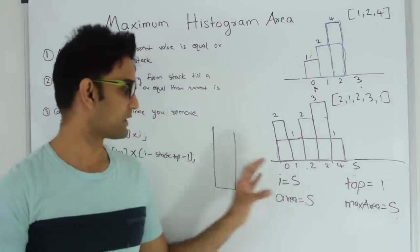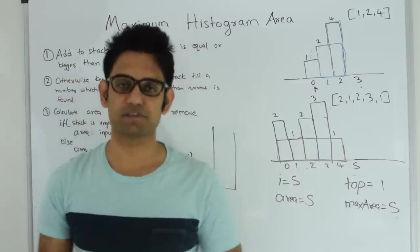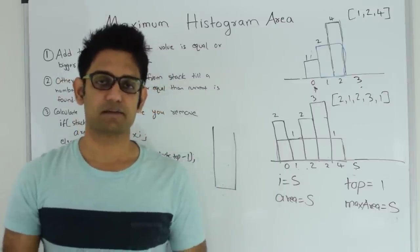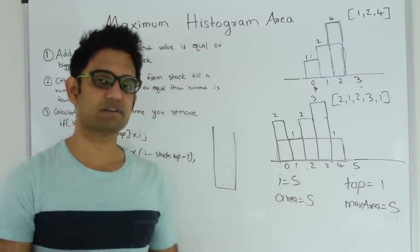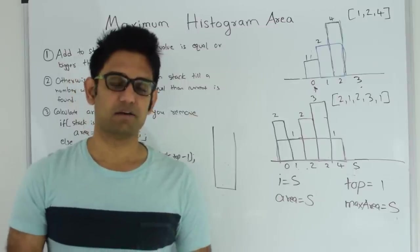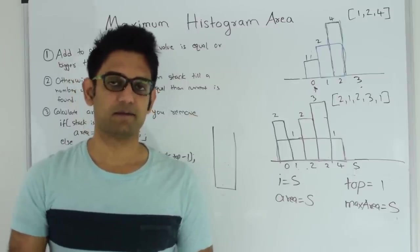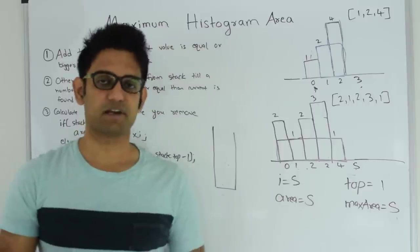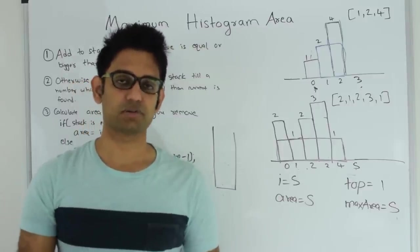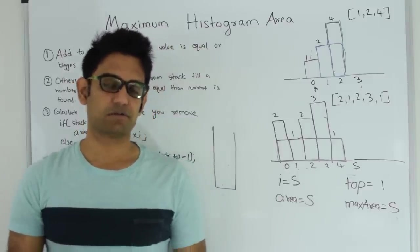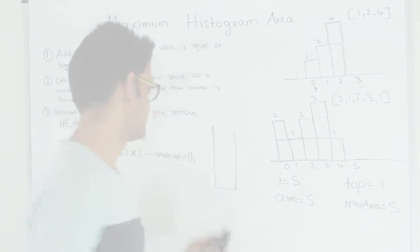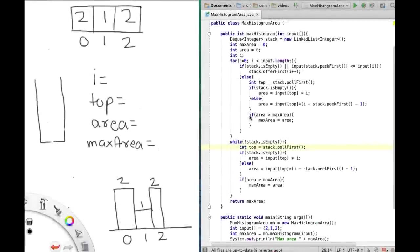The space complexity for this algorithm is the size of the stack, which in the worst case is O(n). The time complexity in the worst case is O(2n), which is also O(n). Now let's look at the code. The name of the class is MaxHistogramArea and the name of the function is maxHistogram, which takes an input array representing the height of bars in the bar graph and returns the max area.